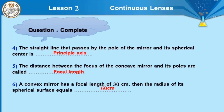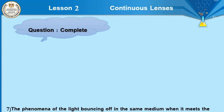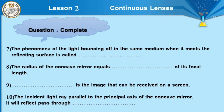Question number 6: a convex mirror has focal length 30 cm. The radius of its spherical surface equals 60 cm, because the radius equals double the focal length. Question number 7: the phenomenon of light bouncing off in the same medium when it meets a reflecting surface is called light reflection. Question number 8: the radius of a concave mirror equals double its focal length, so the focal length equals half the radius. Question number 9: which image type can be received on a screen — real or virtual? Real image.